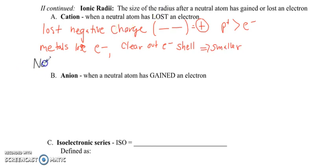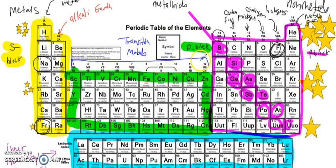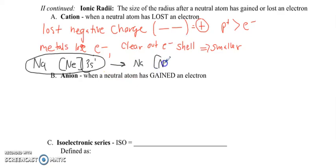Let's use sodium as an example. Sodium's abbreviated electron configuration is [Ne] 3s1. Sodium has a problem — it is not stable, not anywhere close to being a noble gas. It could gain seven more electrons to be like argon, or it could lose that one valence electron and become like neon. So sodium's neutral configuration is [Ne] 3s1; it's going to lose that valence electron, becoming sodium with an electron configuration just like neon, and no more electrons in the 3s shell.